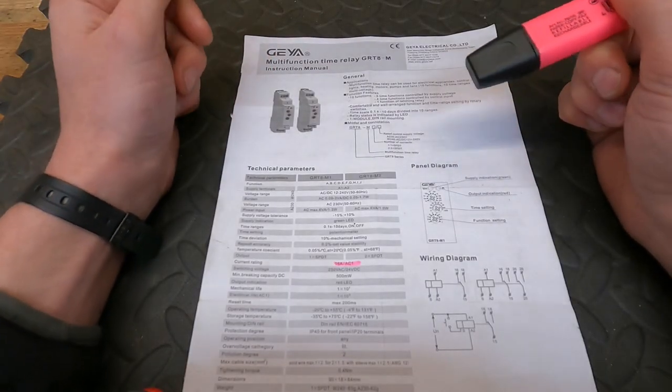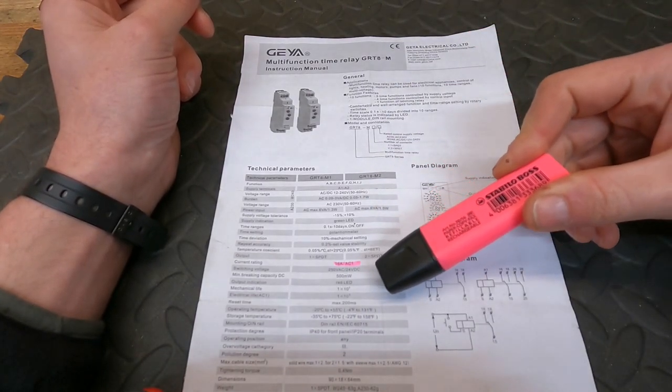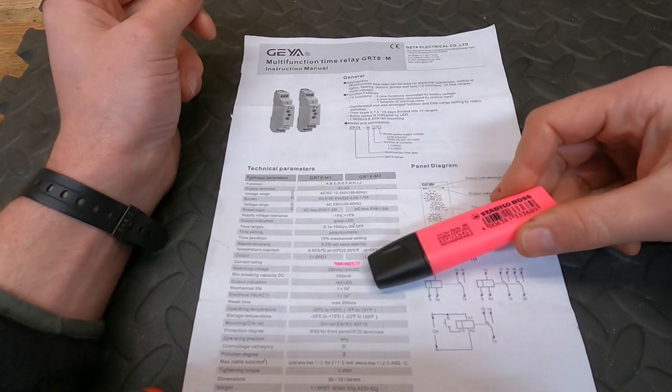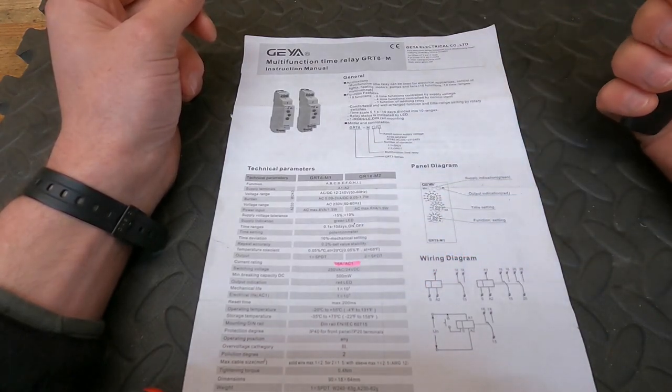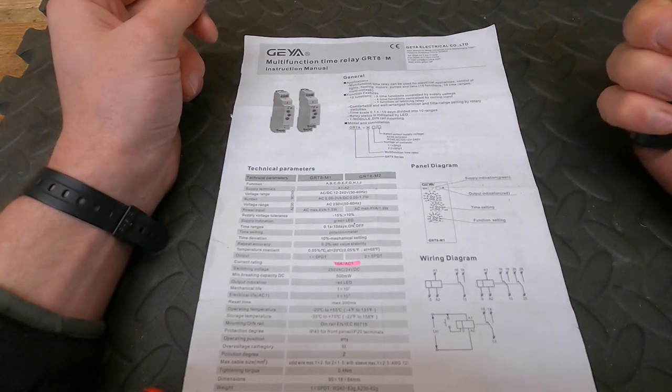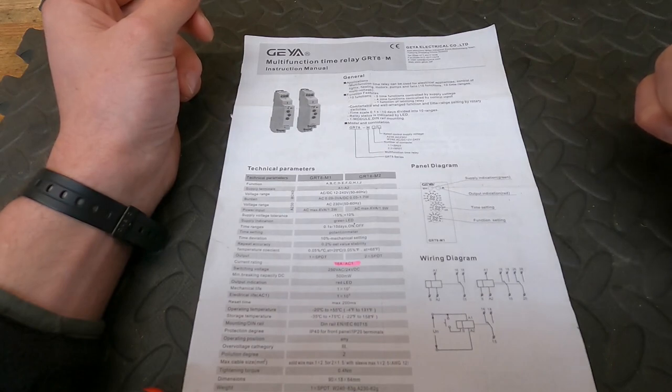This is the time delay relay spec sheet. When I was looking over it, I noticed a bit of an issue. The current rating is noted as 16 amps AC1. The AC1 part of that means that the current rating applies to non-inductive or slightly inductive loads with a power factor greater than 0.95.